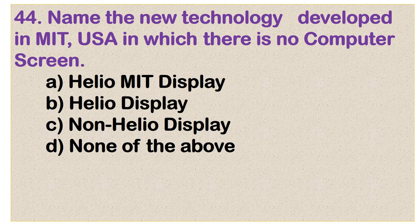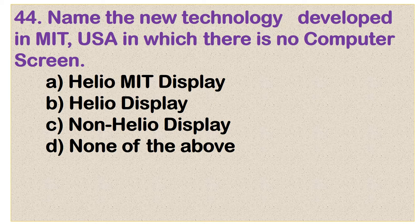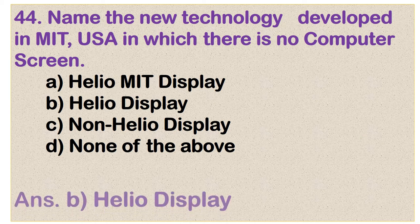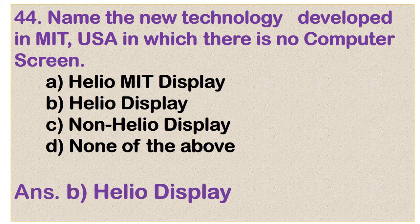Question number 44: Name the new technology developed in Massachusetts Institute of Technology (MIT), USA, in which there is no computer screen. Options are Helio, MIT display, Helio display, non-Helio display, and none of the above. And option B is the correct answer: Helio display.